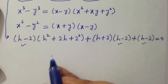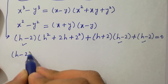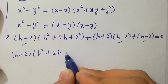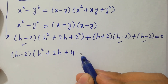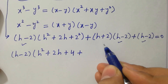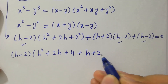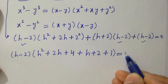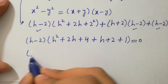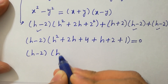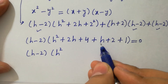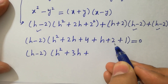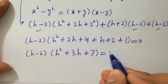And h minus 2 as it is, plus h minus 2 equal to 0. Here h minus 2 can be taken common, giving h minus 2 times h squared plus 2h plus 4 plus h plus 2 plus 1 equal to 0. Simplifying: h minus 2 times h squared plus 3h plus 7 equal to 0.